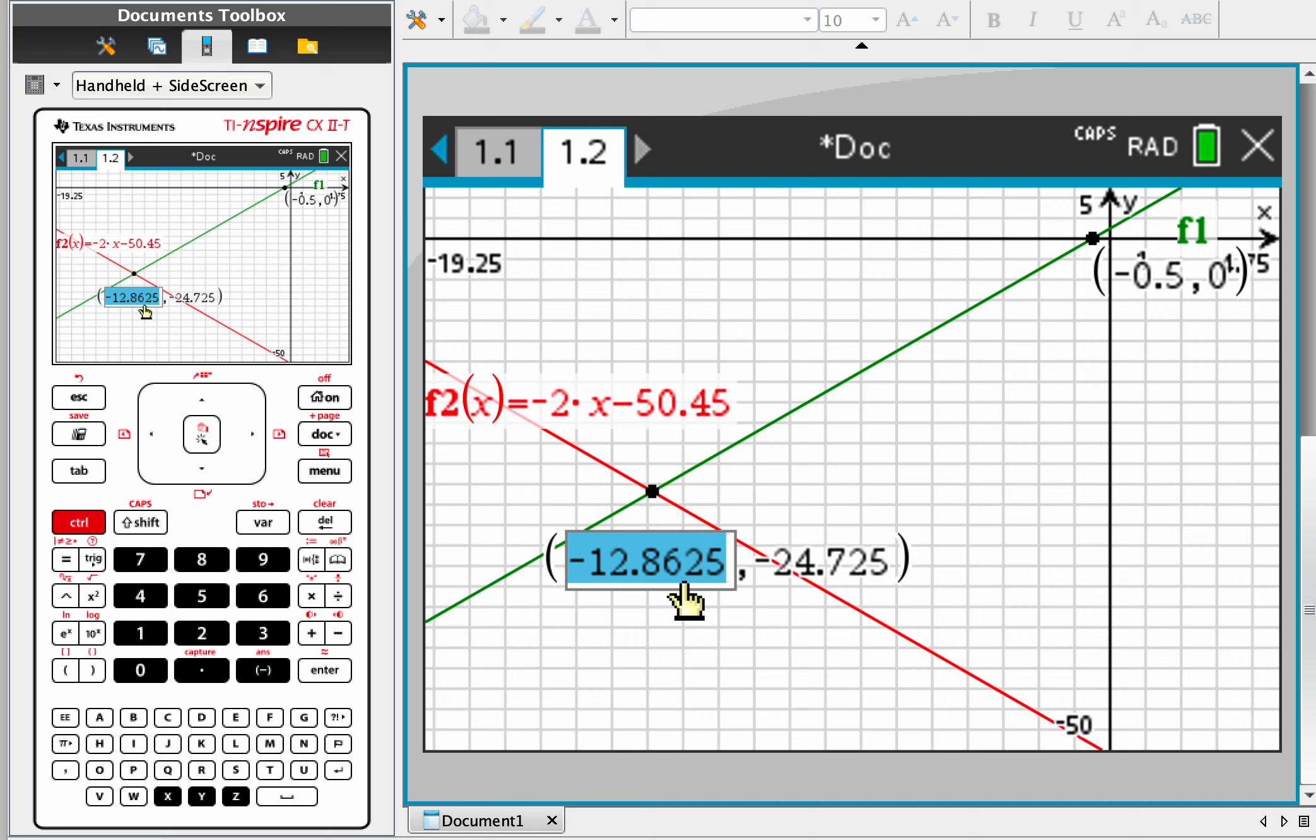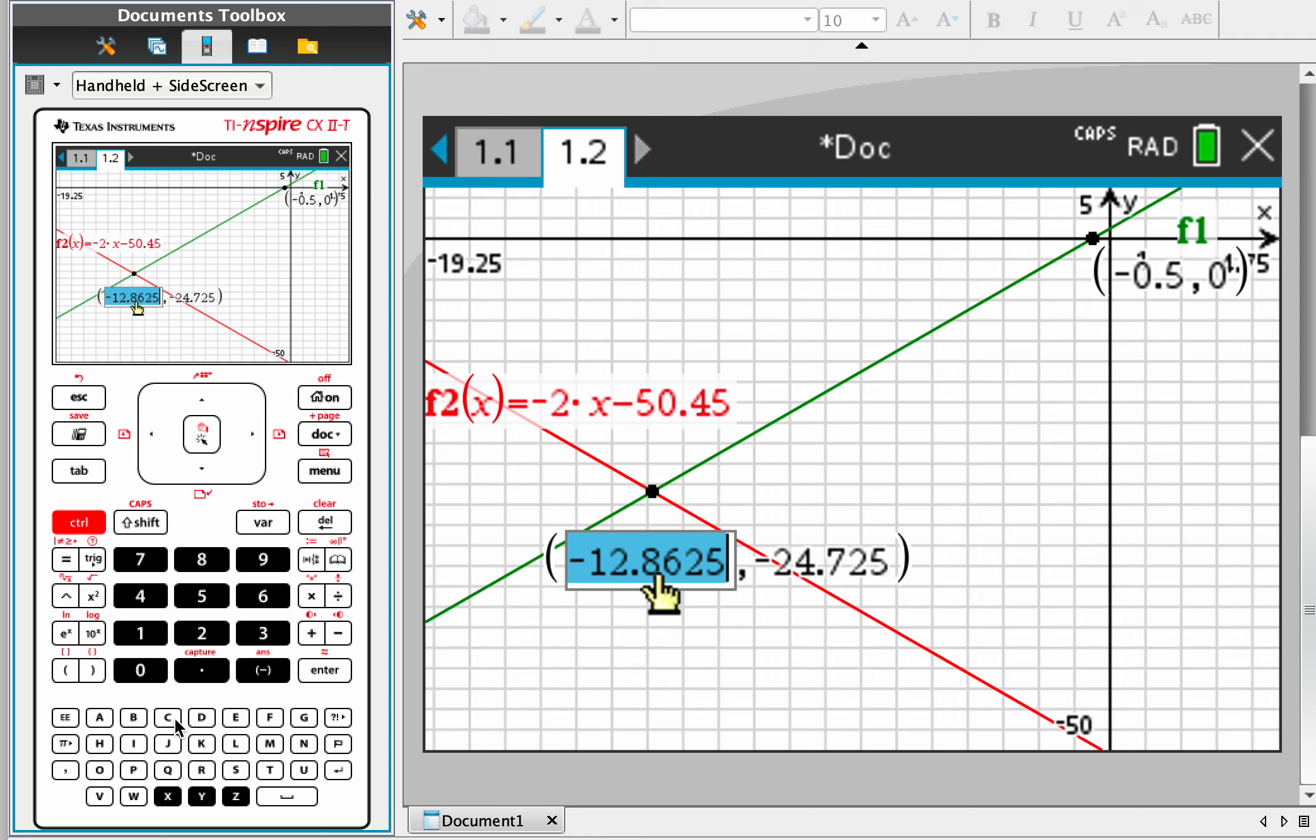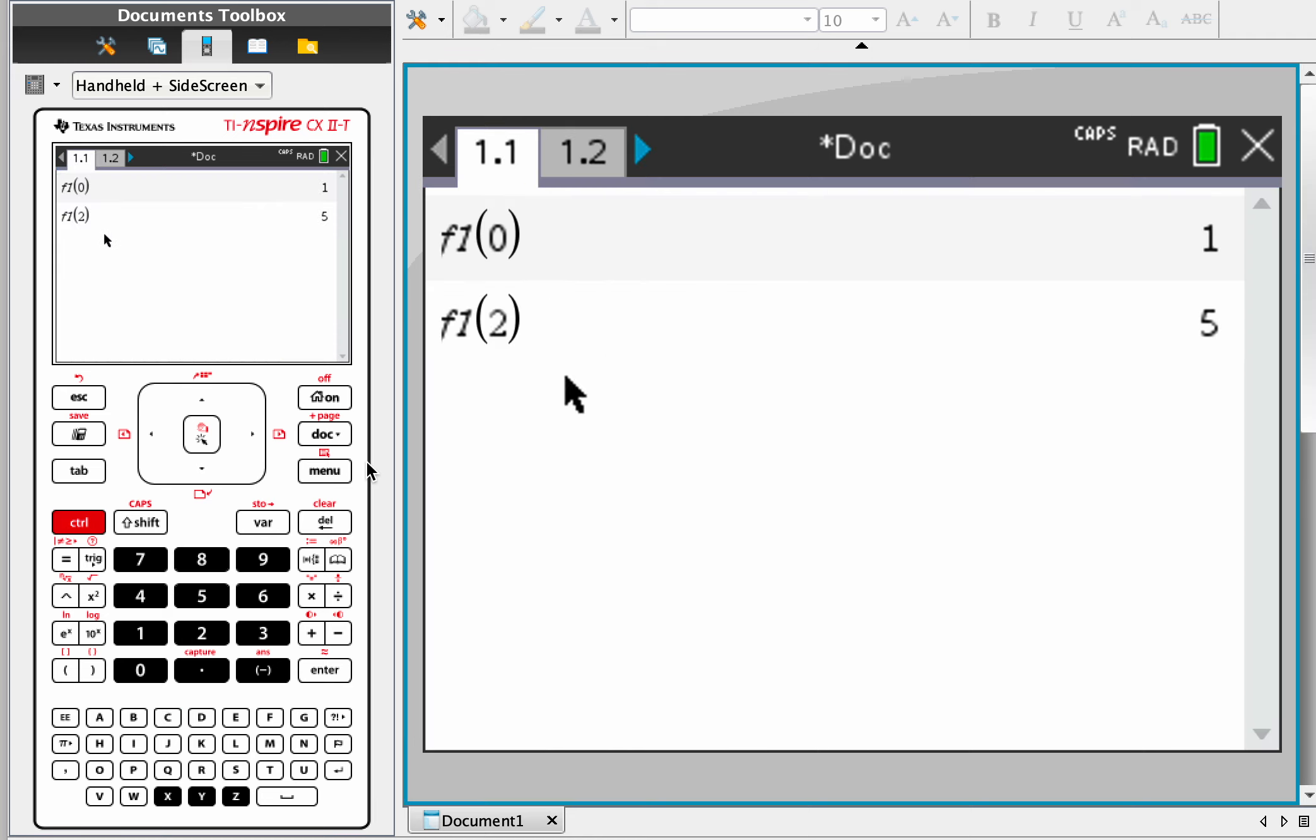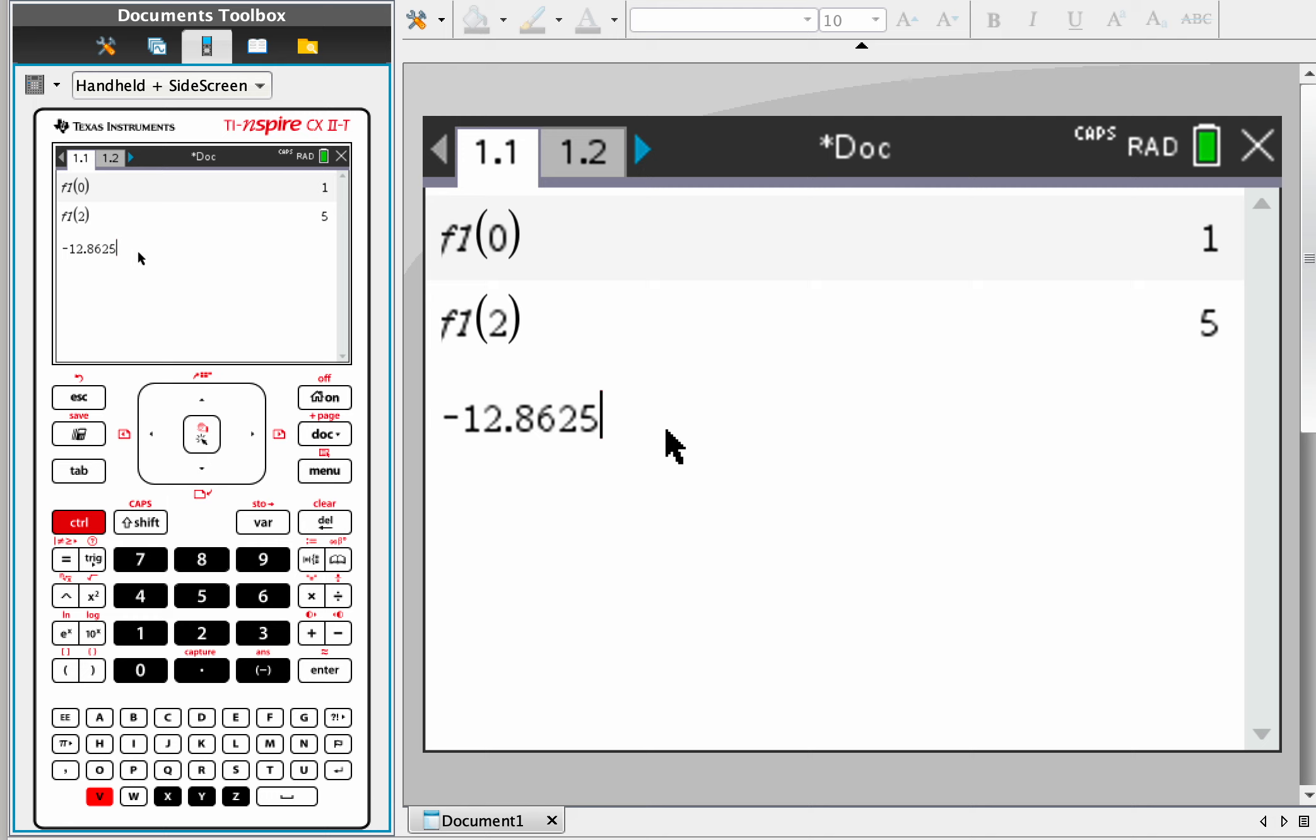You want it to round perhaps only at the end, so if you want to copy and paste that, you can do control C. Let's go to this screen here, and then control V, and now we actually are using that number, which is a little bit more precise than 12.9.